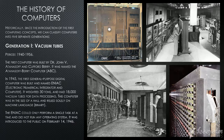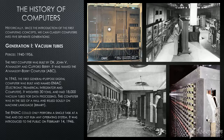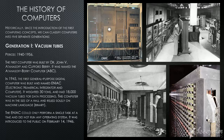Generation 1: Vacuum Tubes. The period is 1940 to 1956. The first computer was built by Dr. John V. Atanasoff and Clifford Berry, and was named the Atanasoff-Berry Computer, or the ABC. In 1945, the first general-purpose digital computer was built and named ENIAC, which stands for Electronic Numerical Integrator and Computer. It weighed over 30 tons and had 18,000 vacuum tubes for data processing. This computer was the size of a hall and relied solely on machine language, or binary language. The ENIAC could only perform a single task at a time and did not run any operating system. It was introduced to the public on February 14, 1946.